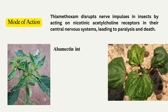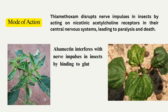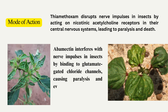Mode of action. Thiamethoxam disrupts nerve impulses in insects by acting on nicotinic acetylcholine receptors in their central nervous systems, leading to paralysis and death. Abamectin interferes with nerve impulses in insects by binding to glutamate-gated chloride channels, causing paralysis and eventual death.